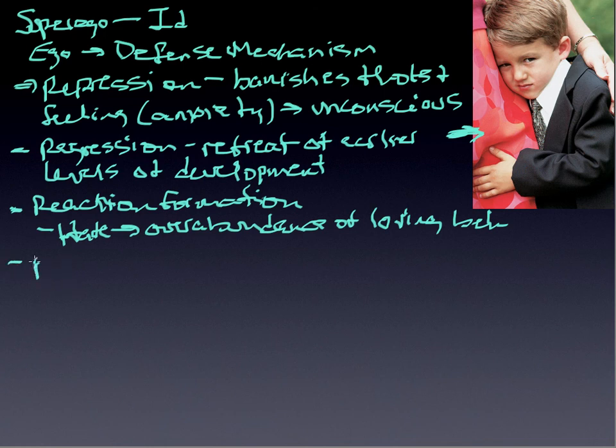Another one is projection. I feel strongly about someone else, and I therefore think that they feel the same way about me. So I project feelings onto threatening impulses and feelings onto others.